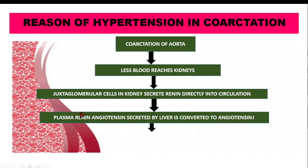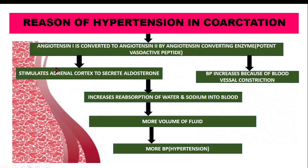Renin is a hormone secreted directly into circulation. Renin stimulates the liver to form plasma renin angiotensinogen, which is converted to angiotensin 1. Angiotensin 1 is then converted to angiotensin 2 by angiotensin converting enzyme (ACE). Angiotensin 2 is a potent vasoconstrictive peptide, causing blood vessel constriction and increased blood pressure.